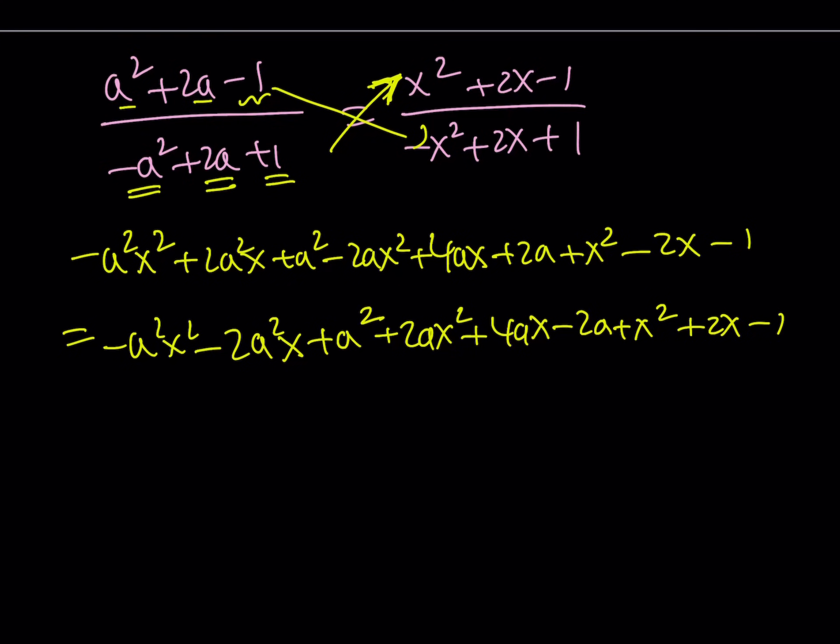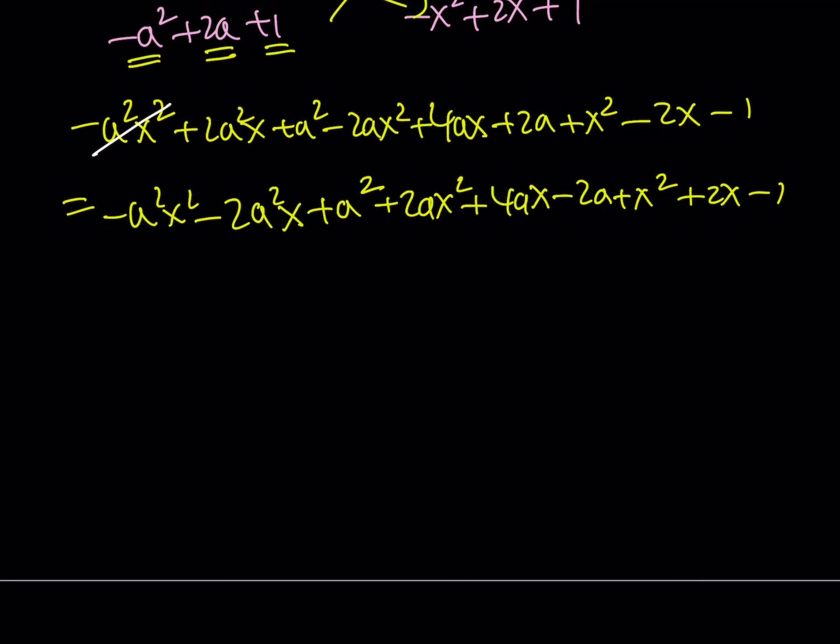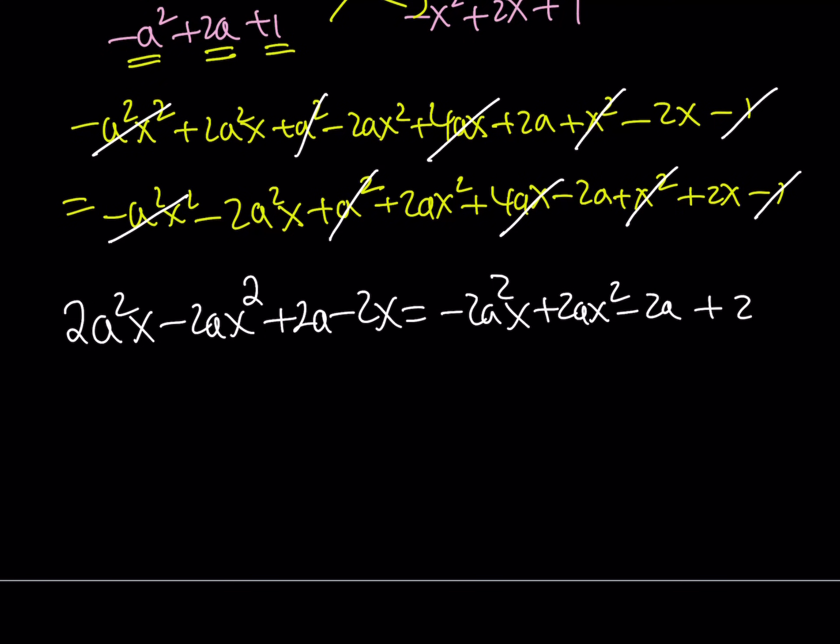Now, a lot of things are going to cancel out here. Let's see what happens. These two are going to cancel out. a squared is going to cancel out. 4ax is going to cancel out. x squared is going to cancel out. And negative 1 is going to cancel out. So we're going to end up with 2a squared x minus 2ax squared plus 2a minus 2x equals negative 2a squared x plus 2ax squared minus 2a plus 2x.